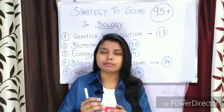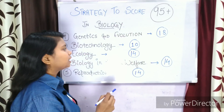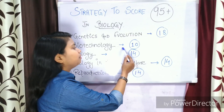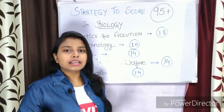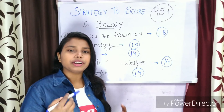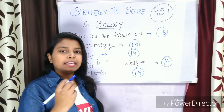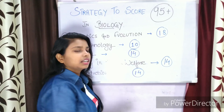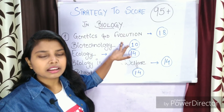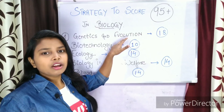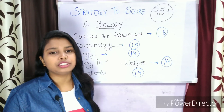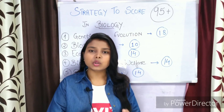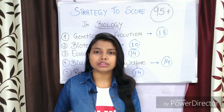The next unit is biotechnology, which carries just 10 marks. The trick here is that you have to cover biotechnology along with genetics, because genetics is the foundation of biotechnology. When you come to biotechnology, many concepts will be easier to understand if you have already covered genetics. So learn genetics first, then move to biotechnology — the concepts will feel much easier.